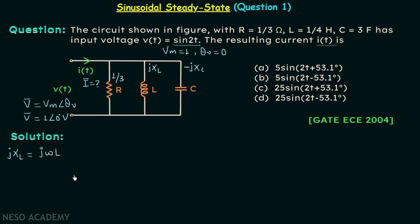Now talking about jXL, we know it is equal to jωL. Omega the angular frequency is equal to 2 and L is equal to 1/4. So jXL is equal to j/2.